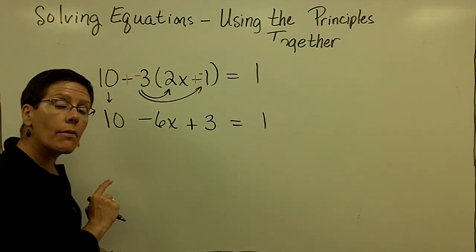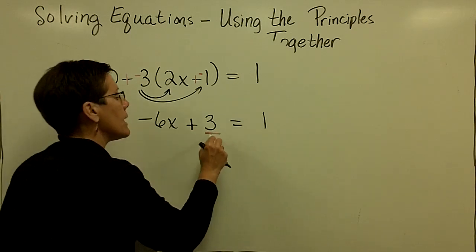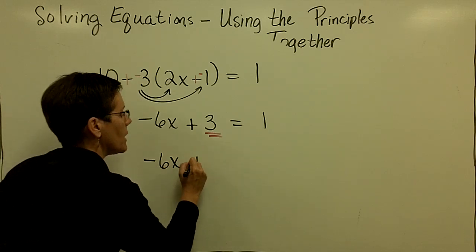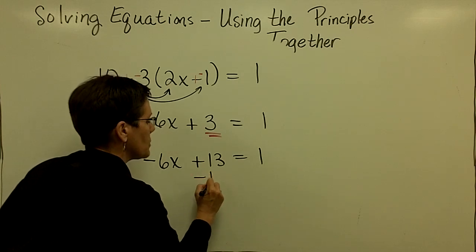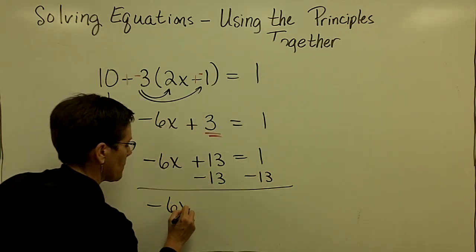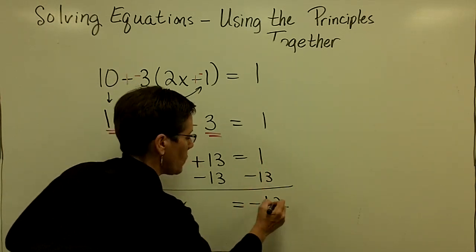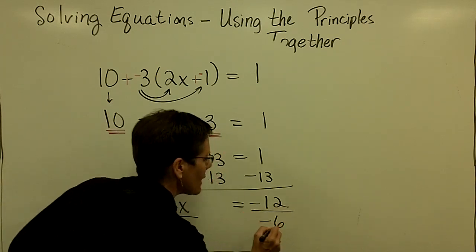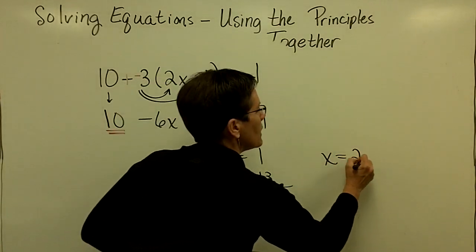On the left-hand side, there are 3 terms. That means 2 of them must be like terms. 10 and 3 add to be 13. So you have a negative 6x plus that 13 is equal to 1. Now would you go ahead and subtract 13 from both sides. And 1 and a negative 13 add to be a negative 12. And we'll divide both sides by a negative 6, both sides by a negative 6. And x will be equal to a negative divided by a negative is a positive 2.